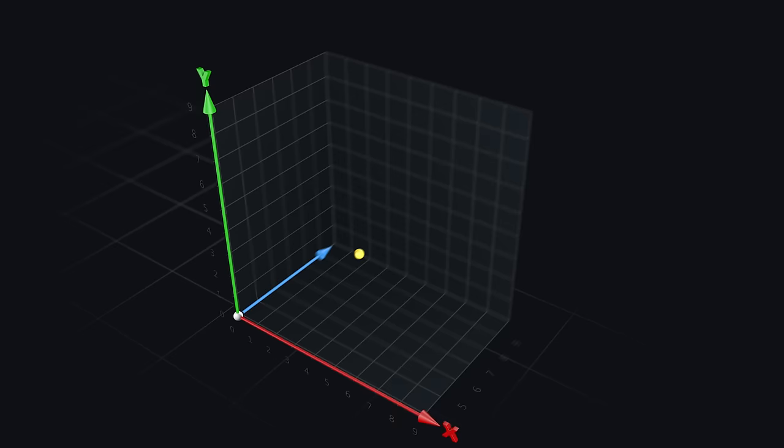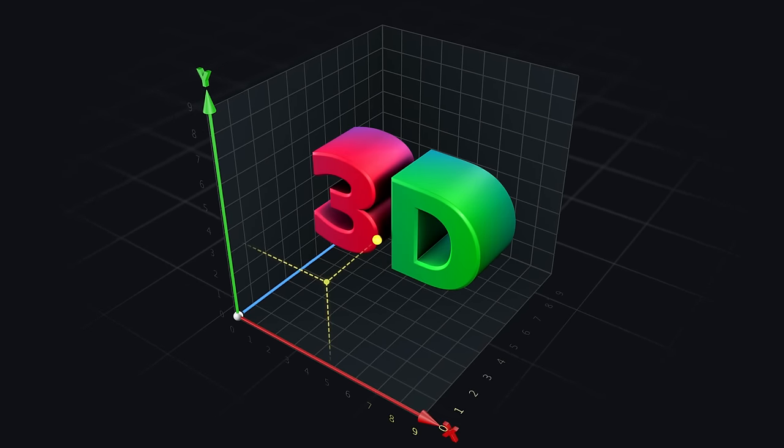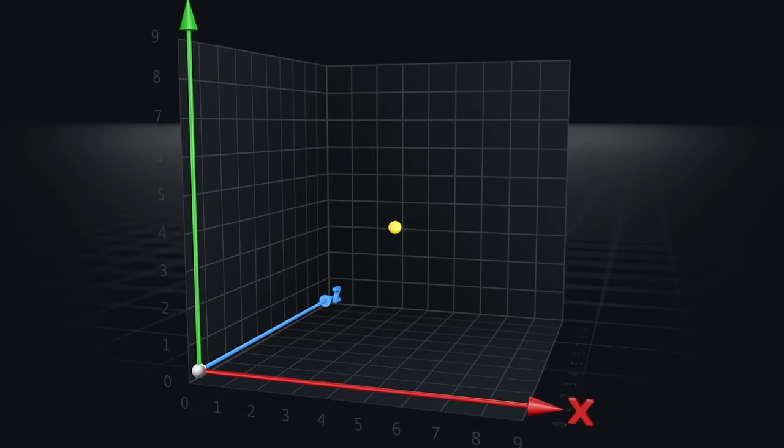If we add a new Z-axis to our coordinate system, the environment becomes three-dimensional. Now our points will have three values instead of two, and the space will also be able to project depth.